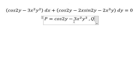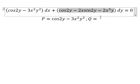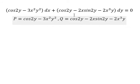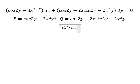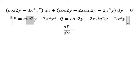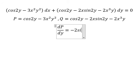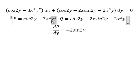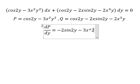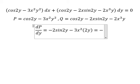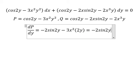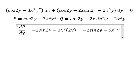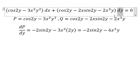And Q equals to this one. Because we have dP/dy, that means we need to do the first derivative of P with respect to y. We have cos(2y); the first derivative of cos(2y) gives negative 2 sin(2y). The first derivative of y squared gives 2y, so we have negative 2 sin(2y) minus 6x squared y, with dy.